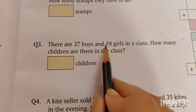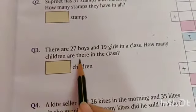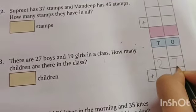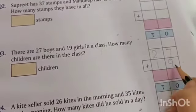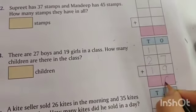Now let's solve this one. There are 27 boys and 19 girls in a class. How many children are there in the class? Let's add 27 boys. First add 27 boys and 19 girls. Let's add 9 plus 7. Add with your fingers: 9, 10, 11, 12, 13, 14, 15, 16.